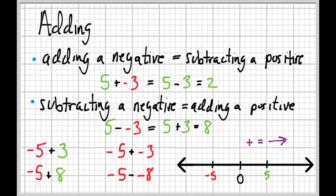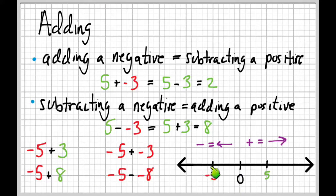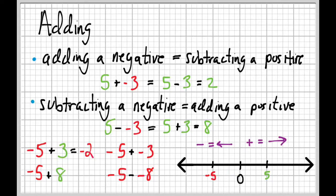On the number line, adding means moving to the right, and subtracting means moving to the left. So for negative five plus three: we start at negative five, and since we're adding three, we move to the right three spaces — one, two, three — which puts us at negative two.